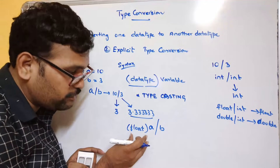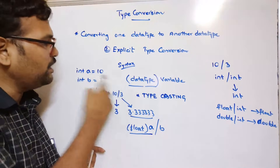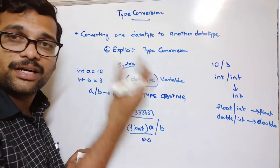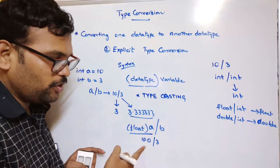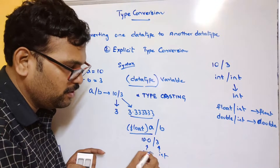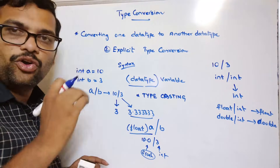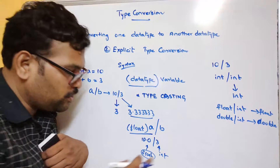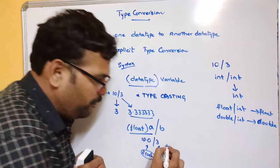Recall operator precedence — the parentheses have the highest precedence, so this will be evaluated first. The value of a is 10, and we are forcibly converting this 10 into a float, so it becomes 10.0. If we divide 10.0 by 3, this is a float divided by an integer. The highest data type here is float, based on memory. So the result will be in float — that is 3.333, based upon the precision.